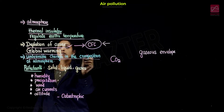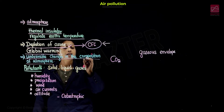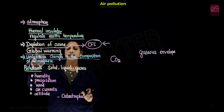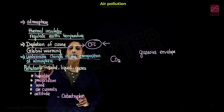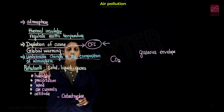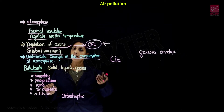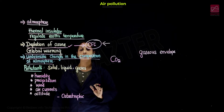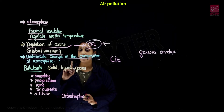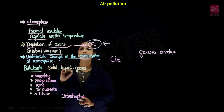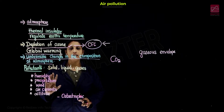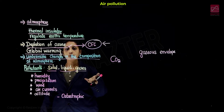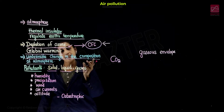Air pollution is defined as undesirable changes in the composition of the atmosphere. Next, what are pollutants? The agent that causes air pollution is called a pollutant. Pollutants can be solid, liquid, or gas. They can be natural in origin or caused by human activities.